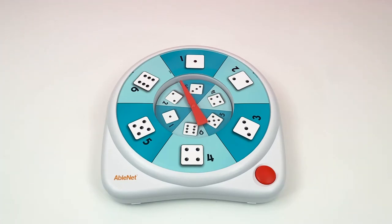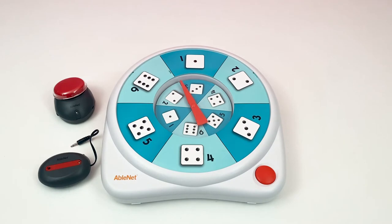To set up wireless switch control, you will need a wireless receiver and transmitter, which are sold separately. I have here the Jelly Beamer and wireless receiver, which can both be purchased from Ablenet.